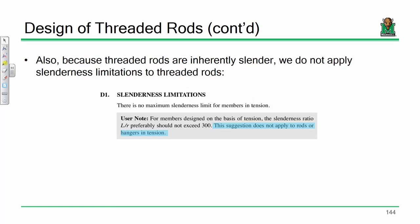A couple of other things: we don't have to worry about the slenderness limit. Threaded rods are inherently slender — they're kind of made to be slender — so we don't apply the L/r limit. We really only have one limit state here, unlike regular tension members with gross section yielding, net section fracture, and block shear rupture.